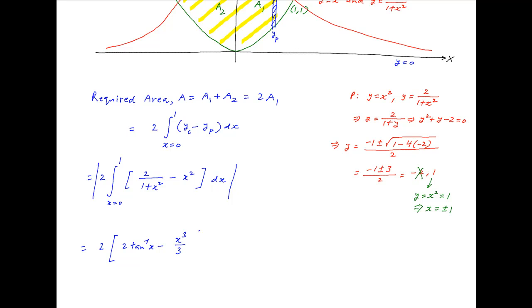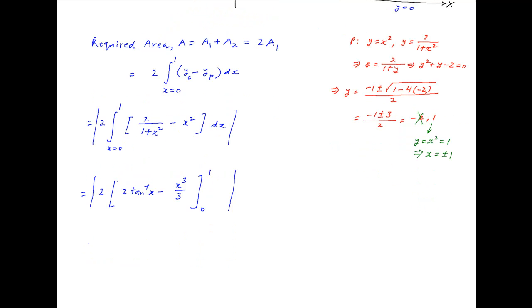Evaluating, the required area equals 2·[2·tan⁻¹(x) − x³/3] from 0 to 1 in modulus, which gives 2·(2·tan⁻¹(1) − 1/3) = 4·tan⁻¹(1) − 2/3 = 4·(π/4) − 2/3 = π − 2/3. This is the required area.